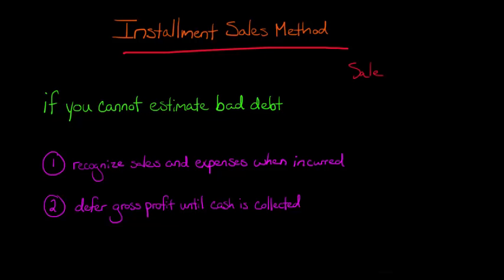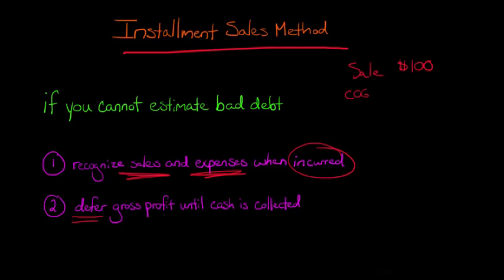With the installment sales method, we're going to record the sale and the expenses when they're incurred, just like a typical sale. However, we're going to defer the gross profit until cash is actually collected. For example, if we had a sale of $100 and cost of goods sold of $80, that would leave us with a gross profit of $20.